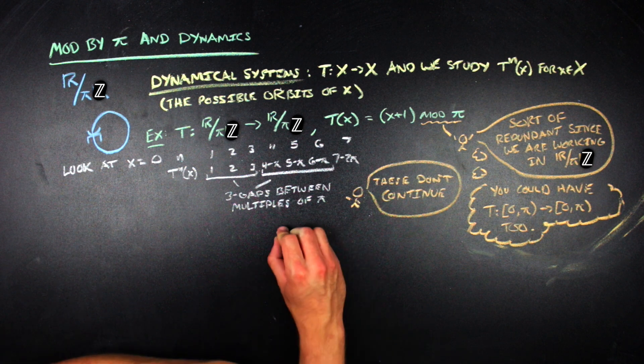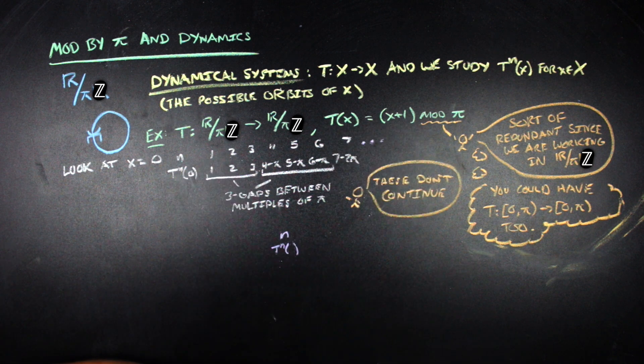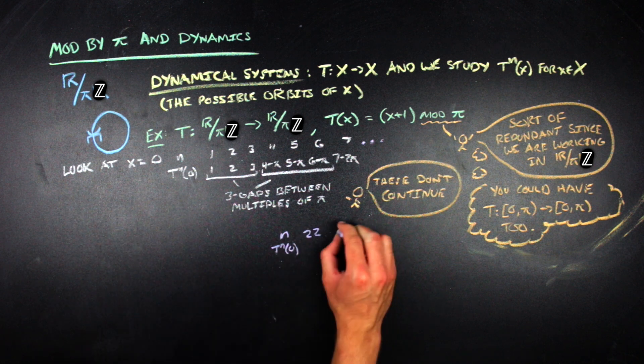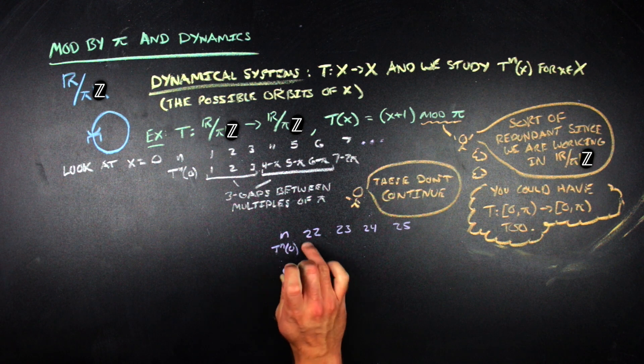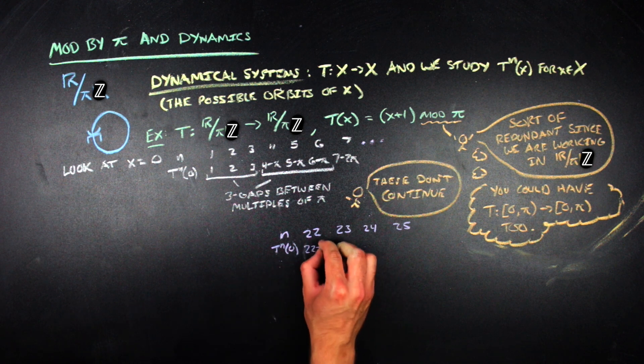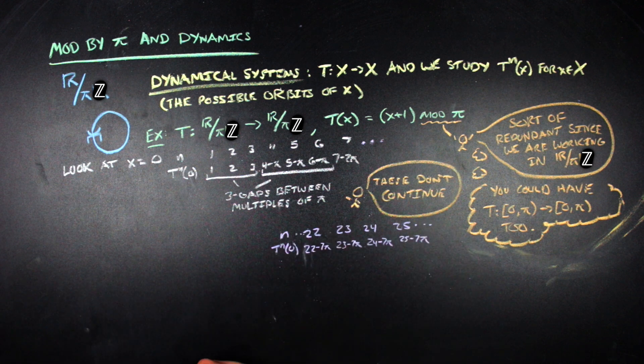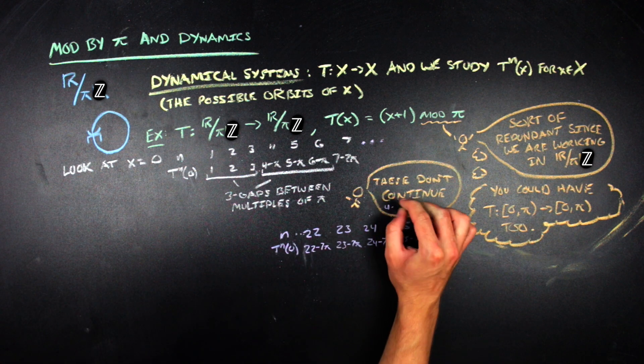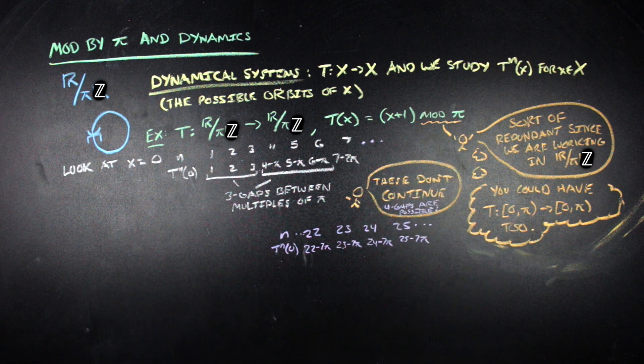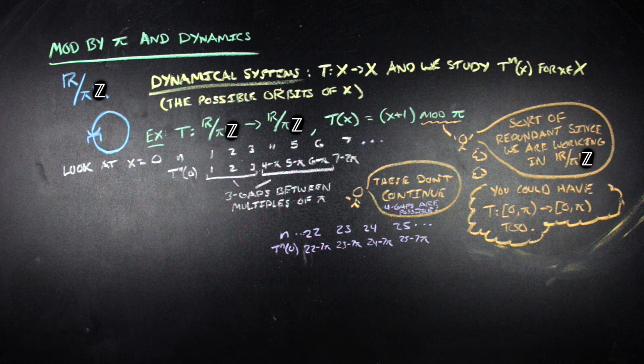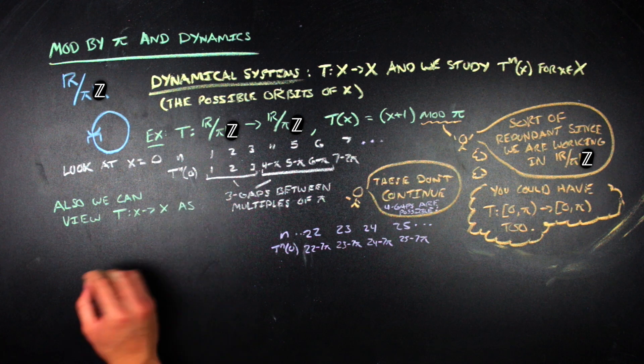Because once you get to the 22nd to the 25th iterates of this function on zero, you're going to get a four gap, and that will be the largest such gap that you can get, is a gap of four times where you subtract by the same multiple of pi. And so you could then think about like, well, how far apart are those four gaps in the orbit of zero?